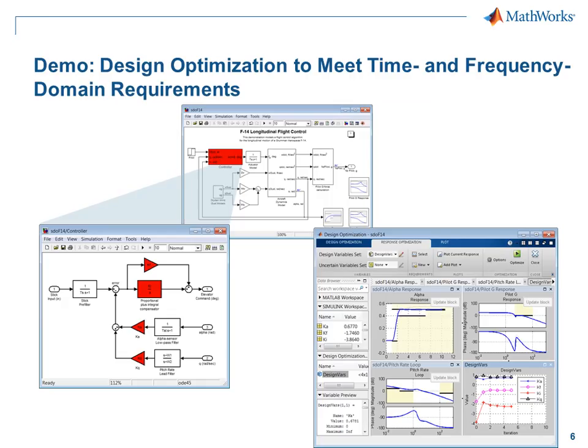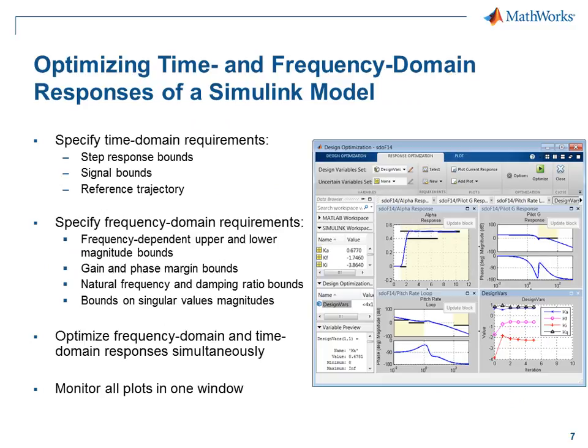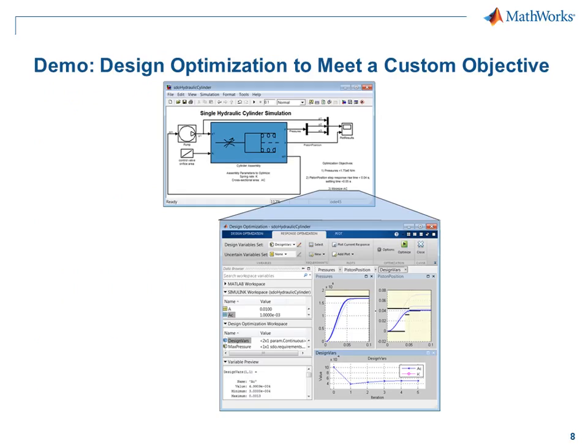To summarize: with this tool you can specify common time domain requirements like step response bounds, general signal bounds, and reference trajectory, as well as various frequency domain requirements — bounds on the magnitude of any transfer function, gain and phase margins, natural frequency and damping ratio bounds, and so on. You can simultaneously optimize frequency and time domain responses, and monitor all plots in one window.